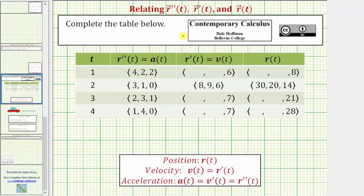We are asked to complete the table below. Looking at the table, in the first column we have time, which we will call seconds. Then we have r double prime of t, which we will call the acceleration vector, followed by r prime of t, which we will call the velocity vector. And then we have r of t, which we will call the position vector.